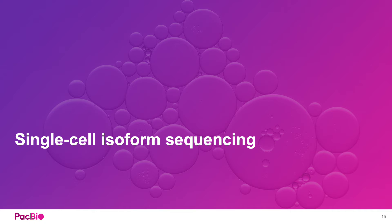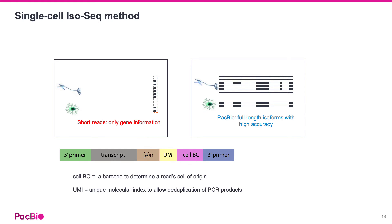Now we will move on to talk about single-cell isoform sequencing. Whereas in bulk transcriptome, cDNA is fragmented then assembled computationally, in single-cell transcript sequencing, short reads are limited to capturing only the ends of molecules where the single-cell barcode and UMI information reside. This severely limits single-cell RNA-seq studies to gene-level information only. In contrast, with single-cell IsoSeq, full-length transcript information along with barcodes and UMIs can be accurately read out.